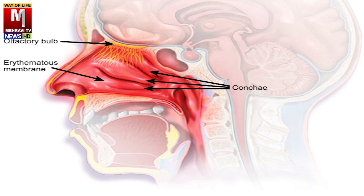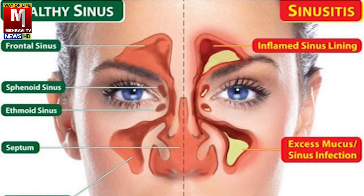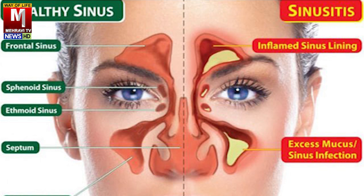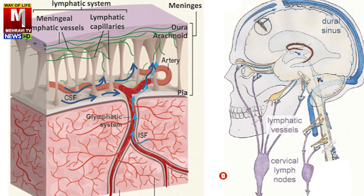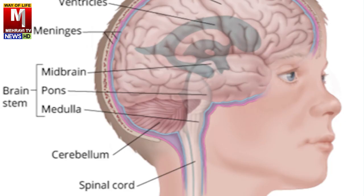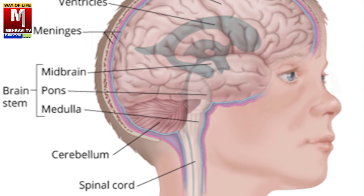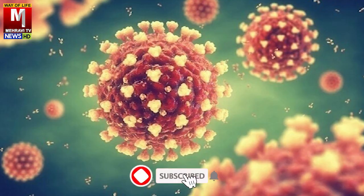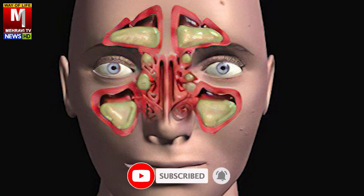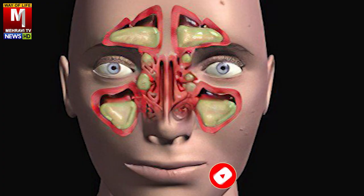سائنس کی اندرونی تہہ ایک باریک رطوبت خارج کرتی ہے جسے موکس کہتے ہیں۔ موکس اندرونی تہہ کو پوری طرح کور کرتی ہے تاکہ اسے نم یعنی موئسٹ رکھا جا سکے۔ ان سائنس کو صاف کرنے کے لیے رطوبات کے اخراج کا راستہ موجود ہوتا ہے جو ڈرینینگ کا کام کرتا ہے۔ اگر اخراج کا راستہ بند ہو جائے تو رطوبت جمع ہو کر گاڑھی ہوتی جاتی ہے اور بیکٹیریا یا وائرس کی نشوونما سے سائنوسائٹس پیدا ہوتی ہے۔